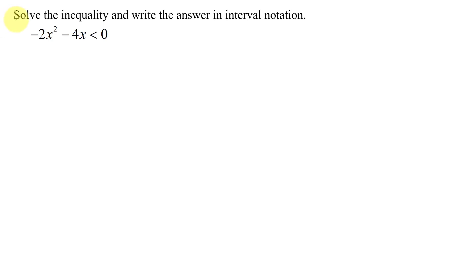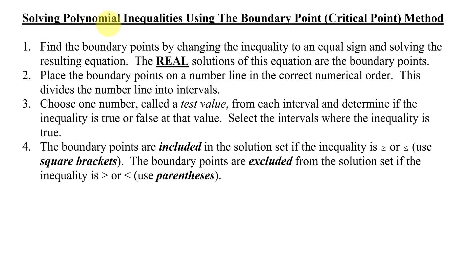In this example, I need to solve the inequality and write the answer in interval notation. The inequality is negative 2x squared minus 4x is less than 0. What type of inequality is this? The highest exponent on an x is a 2, so it's a quadratic inequality, which is just a special type of polynomial inequality. And here are the steps for solving polynomial inequalities using the boundary point or critical point method.